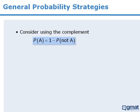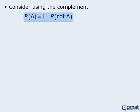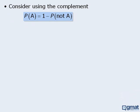One of the first things to consider is whether the question can be solved faster by using the complement. So rather than focus on the probability an event occurs, it may be faster to focus on the probability an event does not occur.